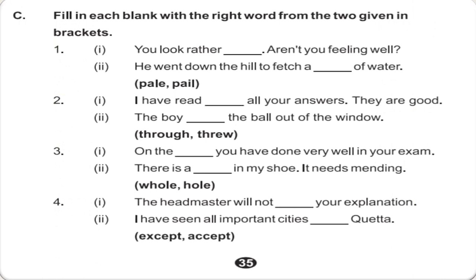Exercise C is: fill in each blank with the right word from the two given in brackets. The first one is 'You look rather ___. Aren't you feeling well?' And we have to write P-A-L-E, pale. The second one is 'He went down the hill to fetch a ___ of water' and we have to write P-A-I-L, pail. The next sentence is 'I have read ___ all your answers. They are good' and we write through. And 'The boy ___ the ball out of the window' — we write threw.